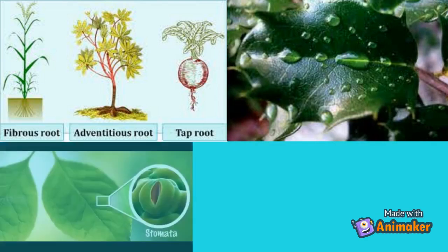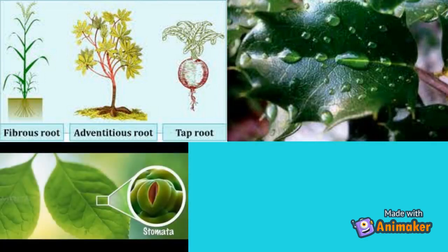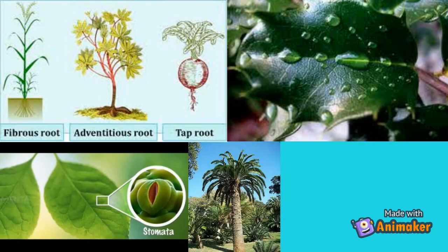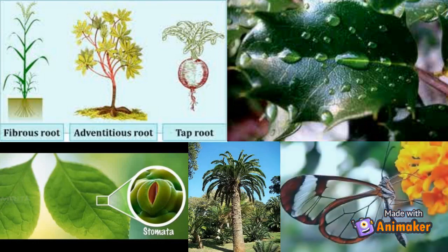waxy cuticle and stomata on the underside of the leaf to minimize or prevent transpiration. Terrestrial plants have much stronger stems, which allows the plant to stay erect even under harsh terrestrial conditions.